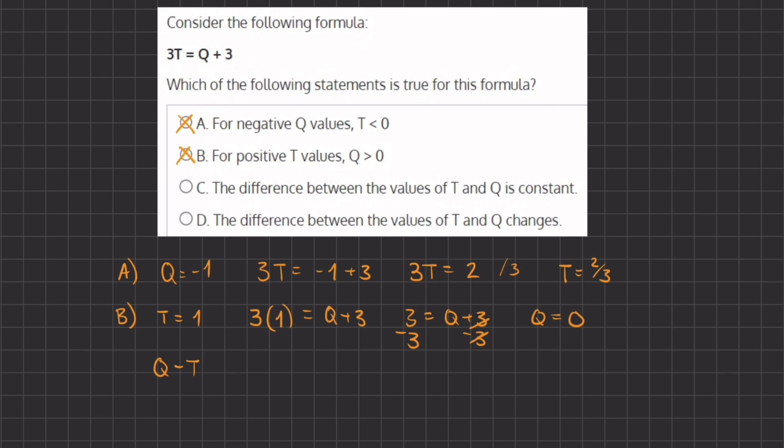in front of the T. So let's first understand what Q is. Q, if we isolate it, I'm going to subtract 3 on both sides. And we have here 3T - 3. And that's the value of Q.